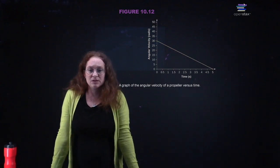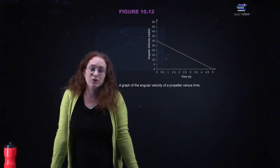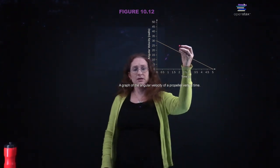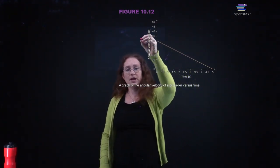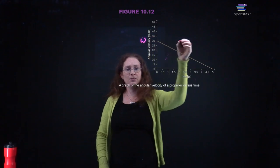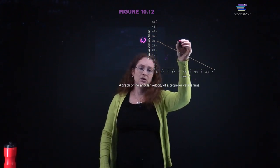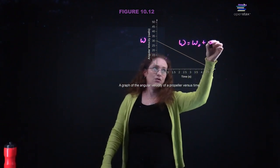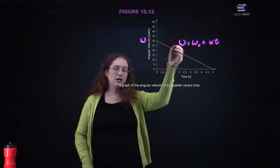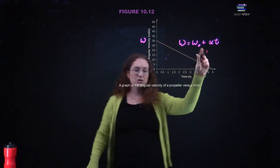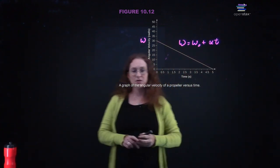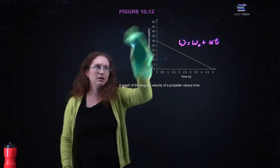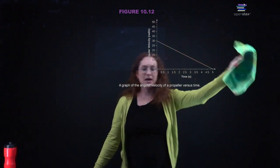Here you can see, as an example, a graph of the angular velocity of a propeller versus time. You can write omega equals omega-naught plus alpha t. You can see that this has a negative slope, so alpha is negative, and that tells you that the propeller is slowing down.